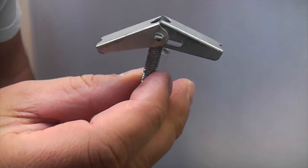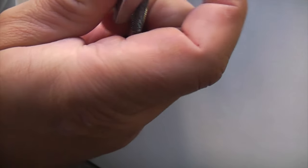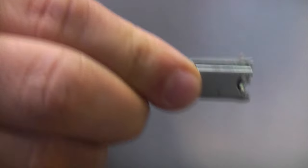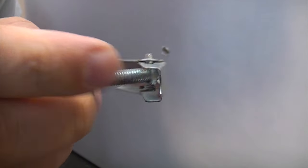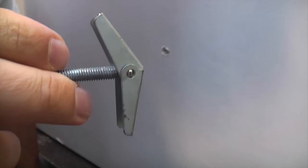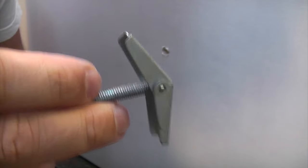Another way of fixing to plasterboard is by using a spring toggle. A spring toggle passes through the hole, and then once it's through, the tabs at the back spring out and they grip on the actual plasterboard. But before you can use these, you need to drill a hole.